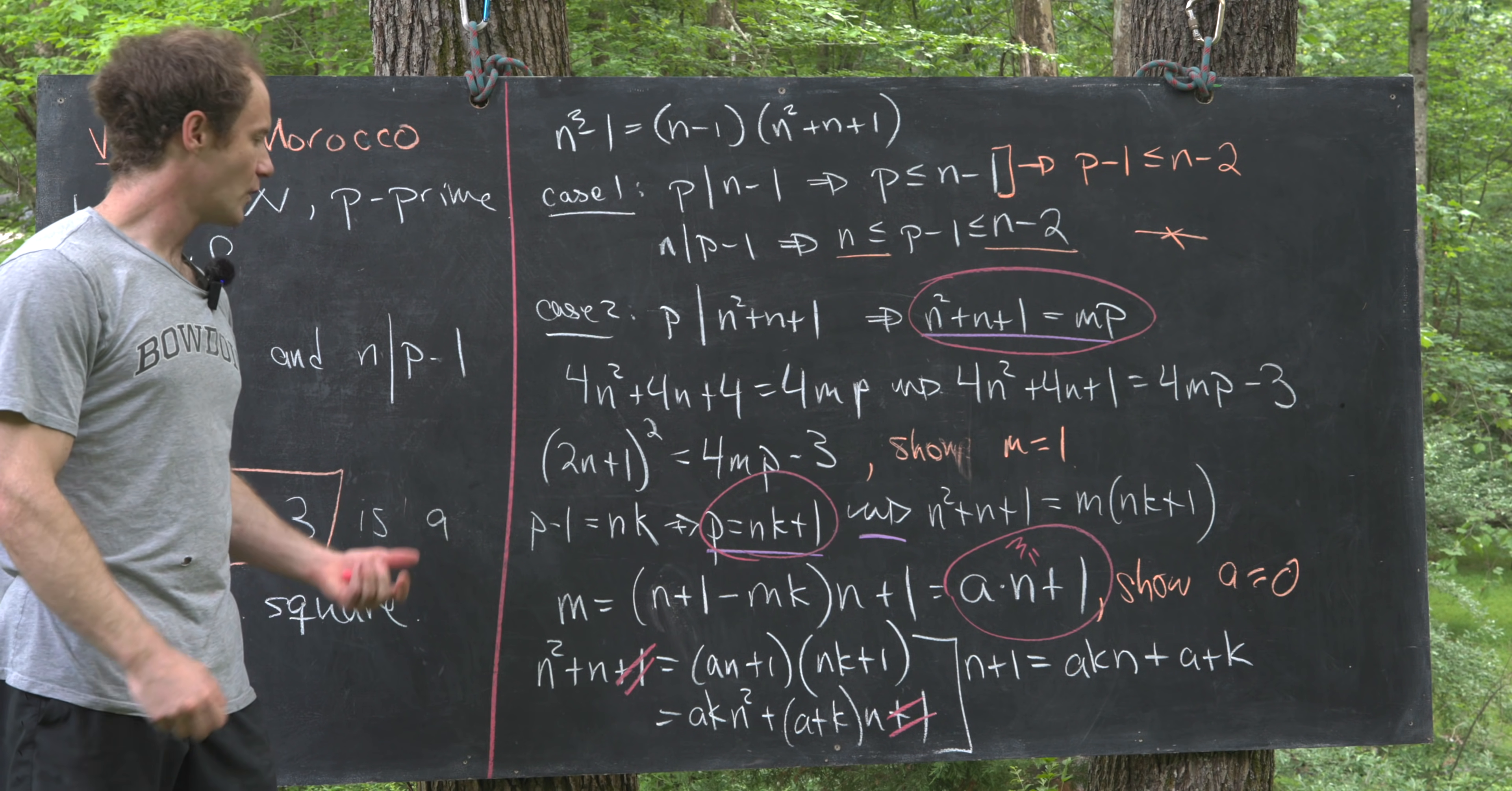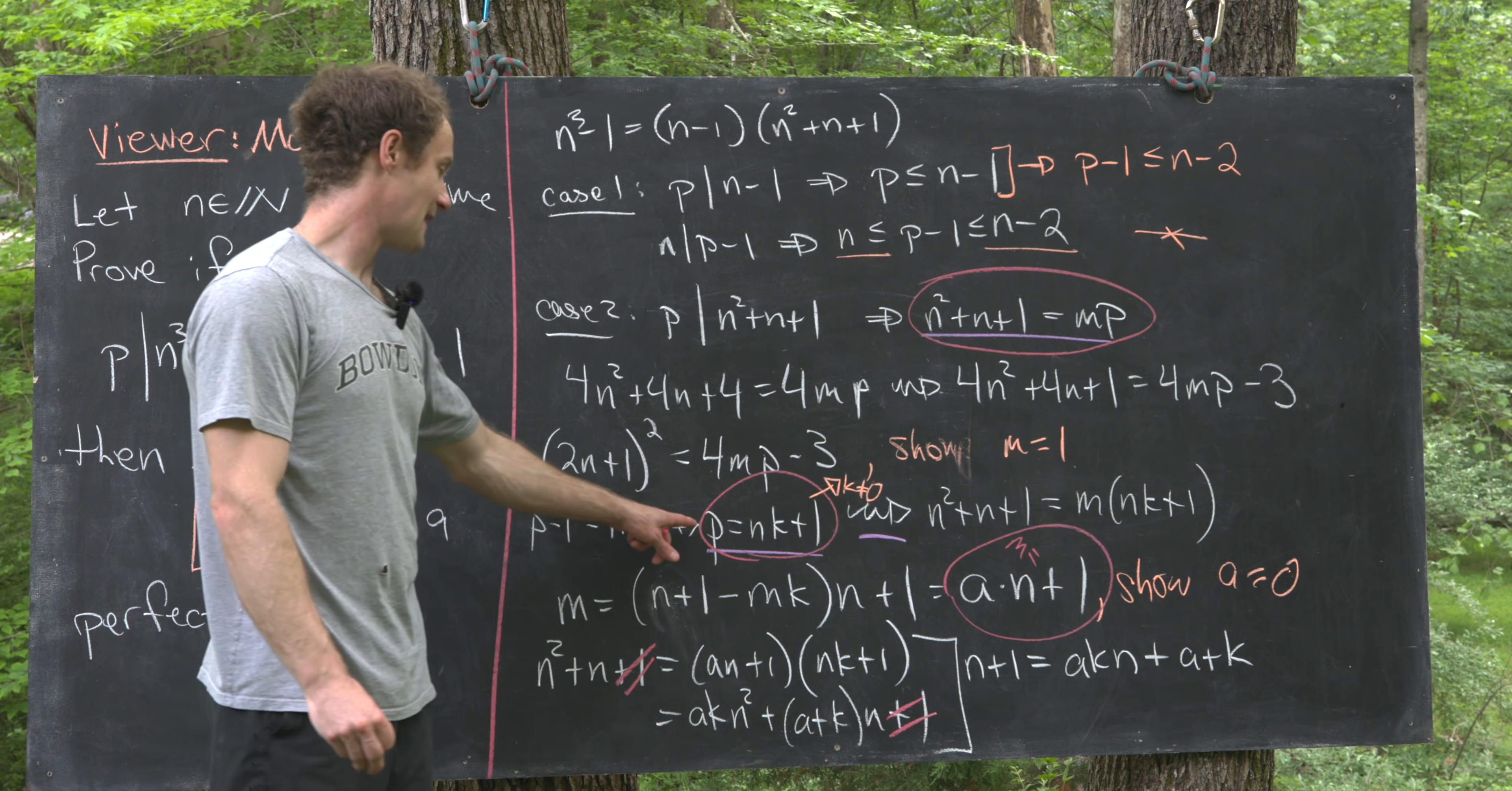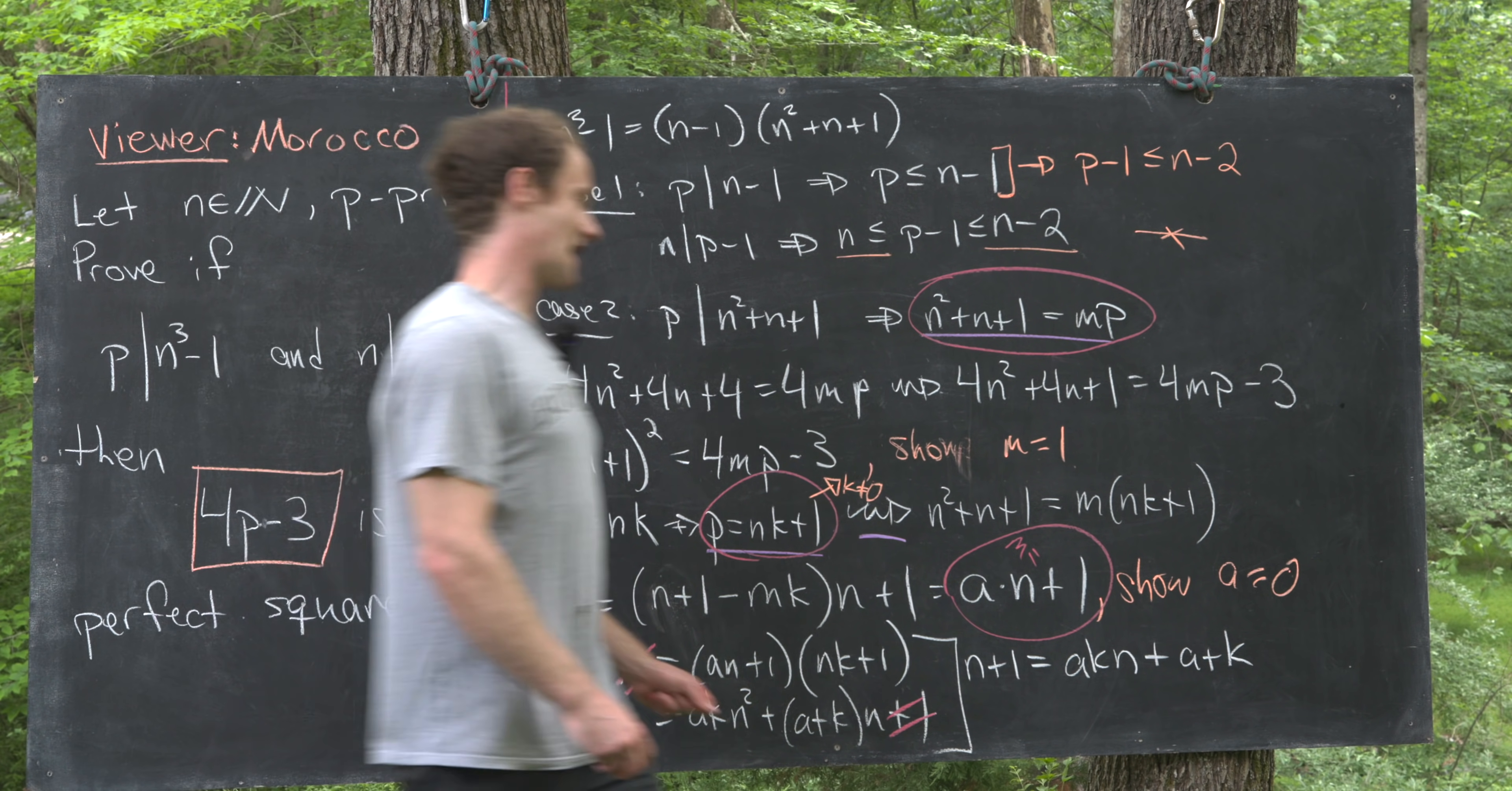Now I want to point out, and this is really important, that k cannot equal 0, because if k is equal to 0, then that means that p would be equal to 1, but 1 is not a prime number. So now let's solve this for n and see what happens.